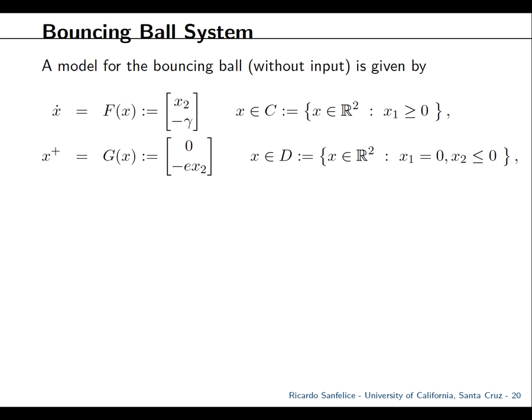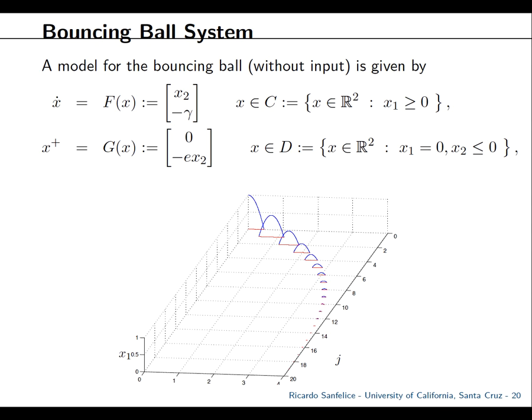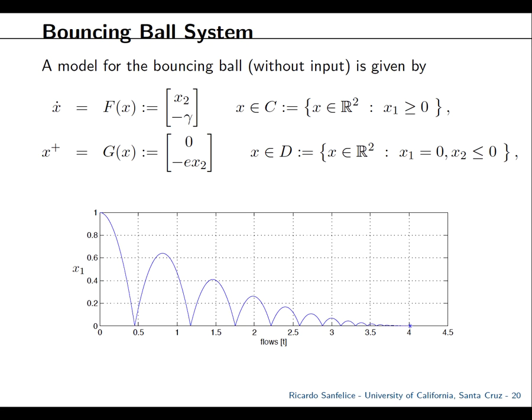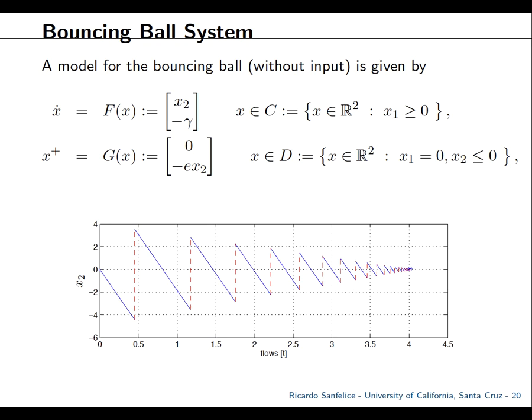Back to the bouncing ball — here I remove the input and write the maps and sets directly. The flow map gives x2 and (-gamma - d*x2), the flow set is x1 > 0. This is what our MATLAB toolbox gives you: starting from some initial position and velocity, around four seconds of simulation. You provide a flow horizon and a jump horizon and let the machine work. The position shows the expected accumulation behavior; the velocity shows where the hybrid behavior appears — going from negative (downward) to positive (upward) at each impact.